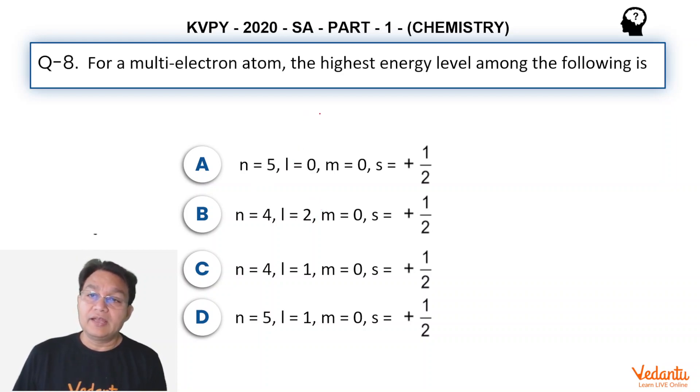And the rules for getting the highest energy level is the N plus L rule. So greater is the value of N plus L, greater will be the energy. And if two energy levels or two orbitals have same value of N plus L, greater the value of N, greater will be the energy.